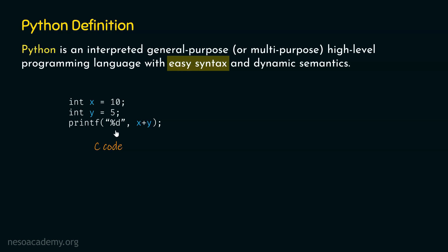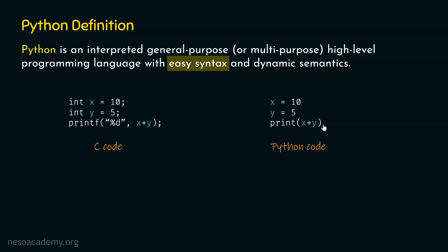Now consider the equivalent Python code: x equals 10, y equals 5, and a print function prints the value of x plus y, which gives 15. This Python code is very easy to understand. In Python there is no need to specify the type of a variable, no need to add a semicolon after every statement, no need to add a placeholder in the function, and the name 'print' is much clearer than 'printf'. So Python is easy to understand because it has very easy syntax.